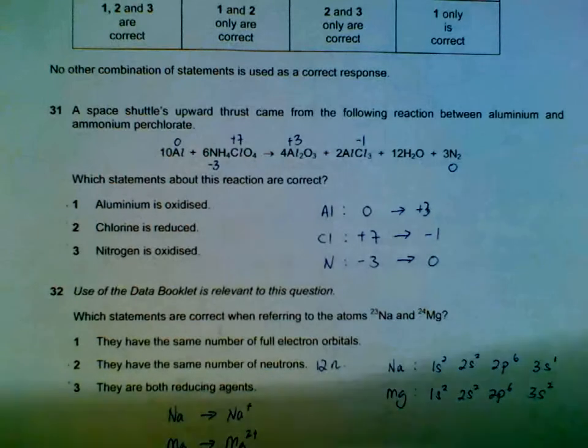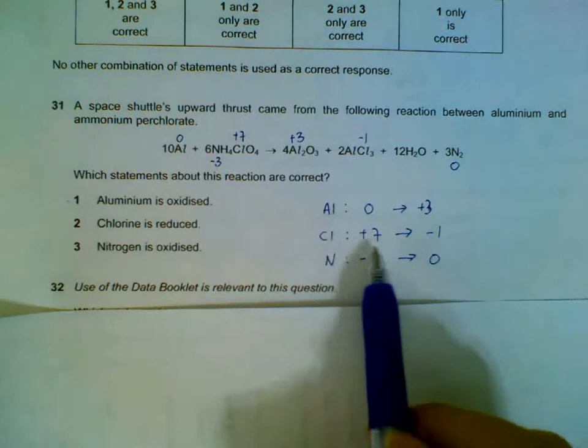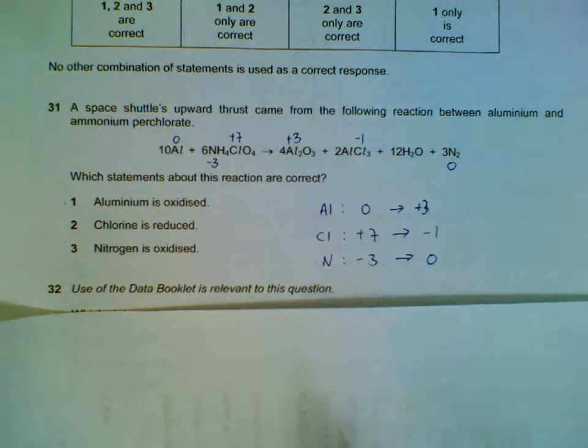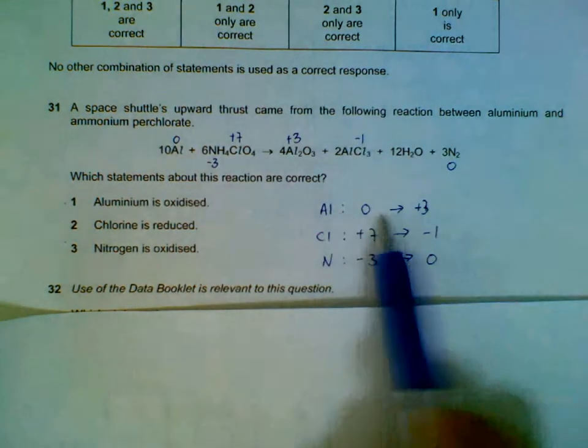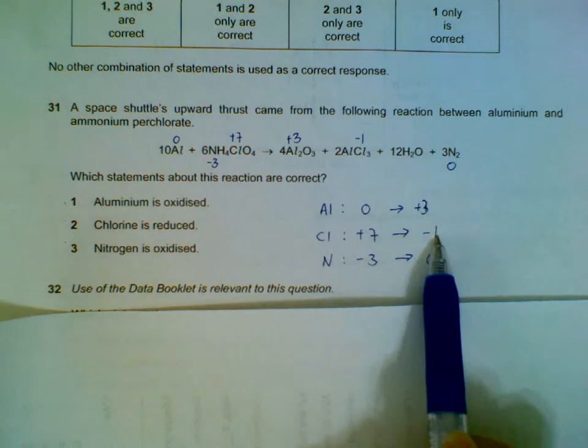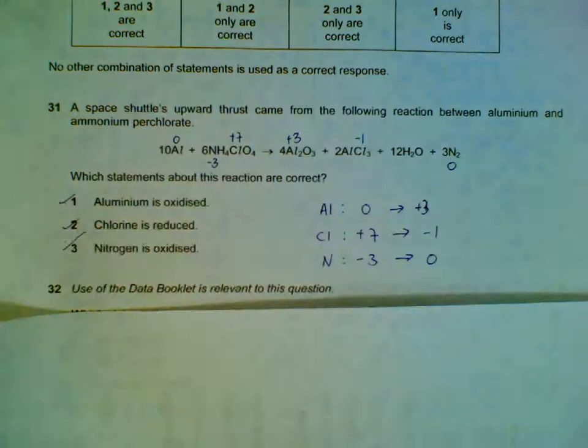Oxidation numbers of aluminum, chlorine and nitrogen - if we did it correctly, you should see that these are the changes for the three of them. Aluminum is increasing, oxidized. Chlorine decreasing, reduced. Nitrogen increasing, oxidized. So all three statements are correct.